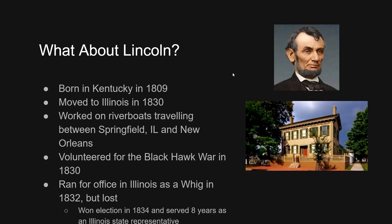Now the big question is, where does Lincoln fit in all of this? Abraham Lincoln was born in Kentucky in 1809. He moved to Indiana as a small child and eventually moves to Illinois in 1830. He settles down in Springfield, Illinois, where he becomes a riverboat captain. He runs for office in Illinois as a Whig in 1832 but he loses. Finally in 1834 he wins an election and serves from 1834 to 1842 as an Illinois state representative.